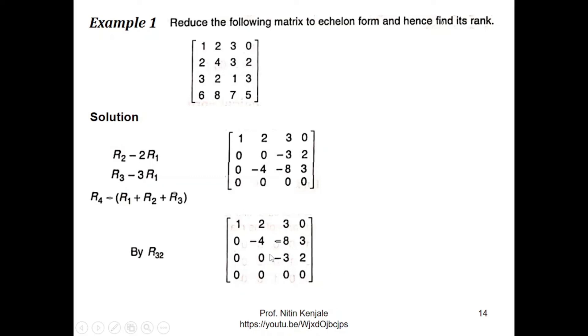Now we are all set to find rank of the given matrix. For that all we need to do is just to count the number of nonzero rows in this matrix. So here I see there are three nonzero rows in this matrix. So its rank is 3.